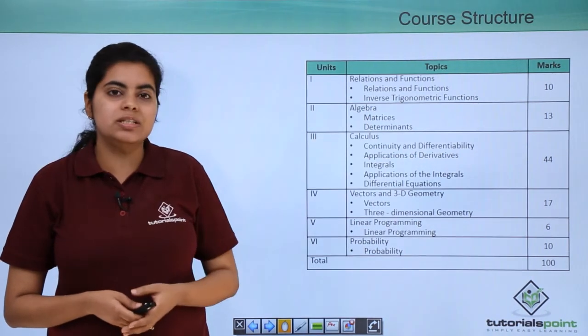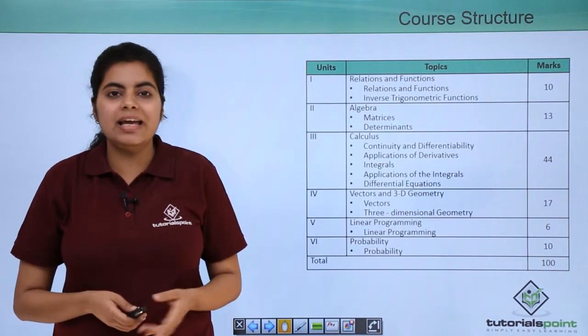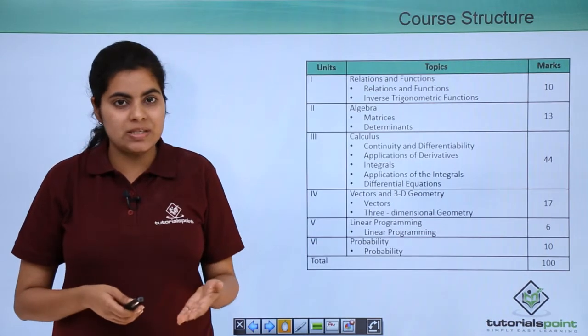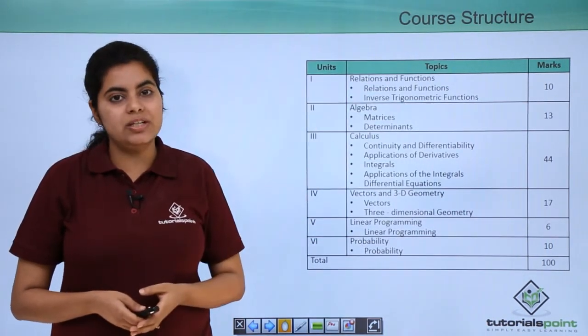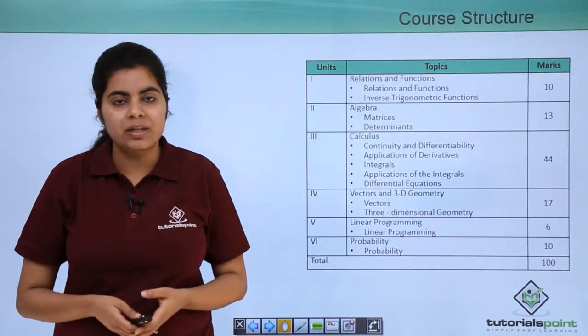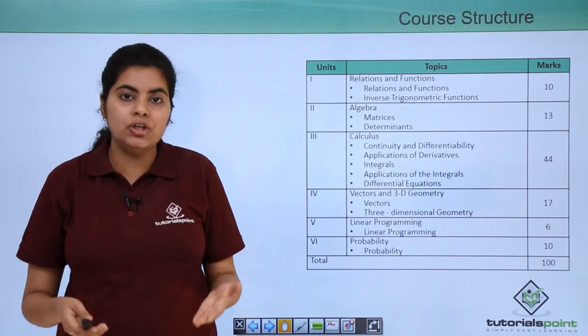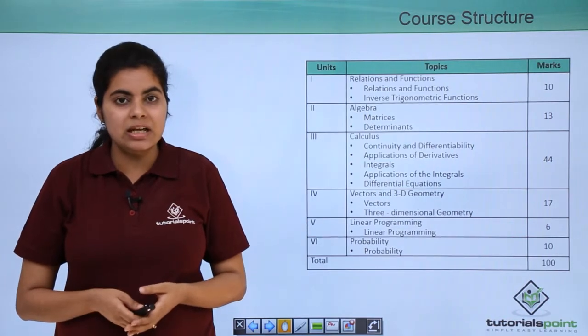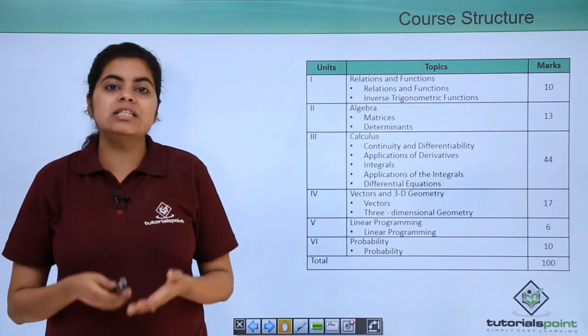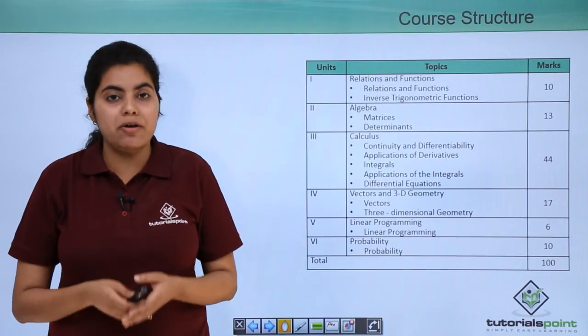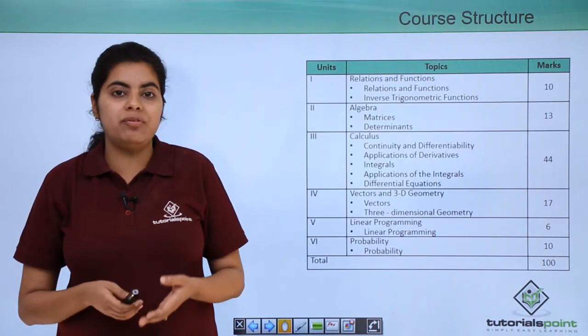About the second unit, that is algebra, there are again two chapters: matrices and determinants. And this unit has overall weightage as you can see of 13 marks. 13 marks are a huge number when considered for scoring good marks in mathematics. This is one of the easiest units which everybody can do and everybody finds interesting.